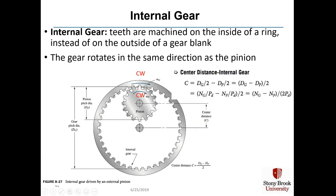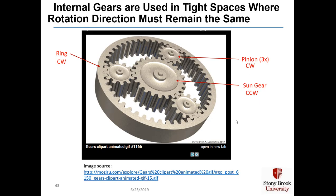An internal gear is one where the teeth are machined on the inside of a ring instead of on the outside of a gear block. The gear rotates in the same direction as the pinion — if the pinion rotates clockwise, it drives the ring gear clockwise as well. The center distance for an internal gear set is calculated by taking the diameter of the ring gear, subtracting the diameter of the pinion, and dividing by two. Internal gears are used in tight spaces where rotational direction must remain the same.